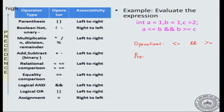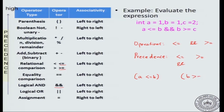The relational comparison operations — less than or equal to and greater than or equal to — have greater precedence over the logical AND. Among operations of the same precedence level, we evaluate left to right. So we will have (a <= b) in parenthesis, then (b >= c) in parenthesis — these have to be done first — and then AND. This will be done first, this will be done second, and this is the third operation.